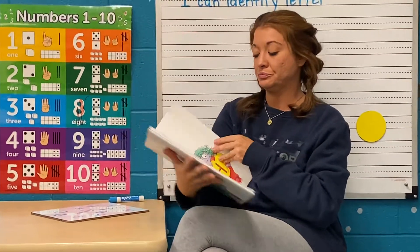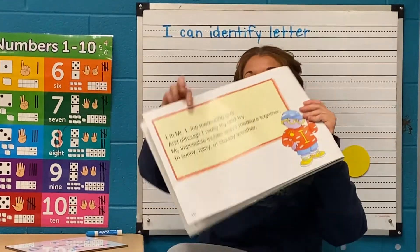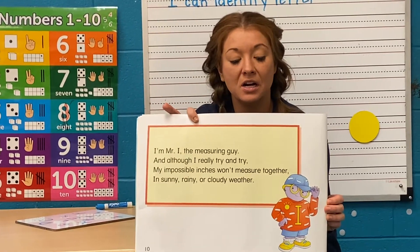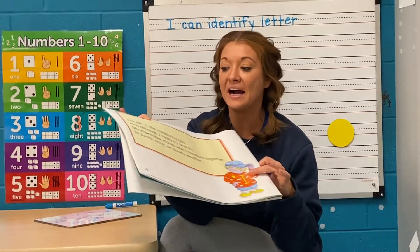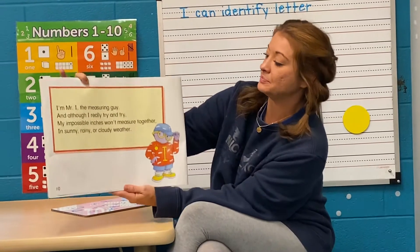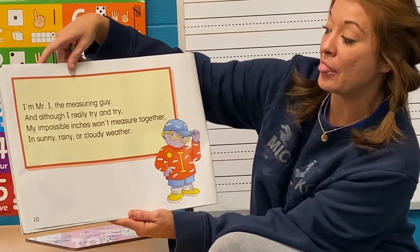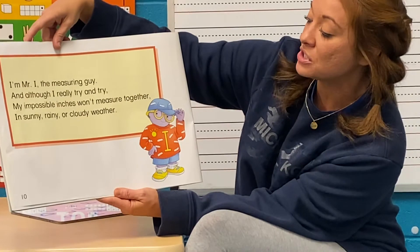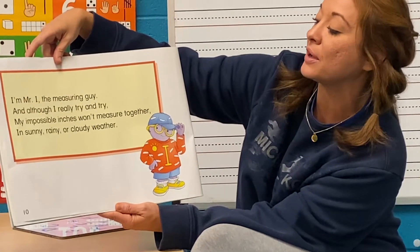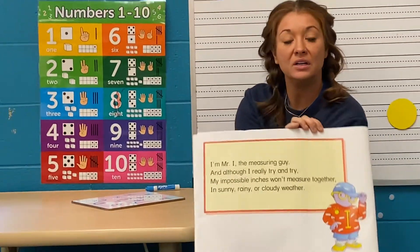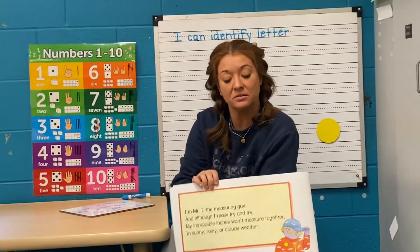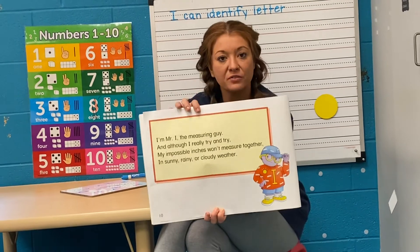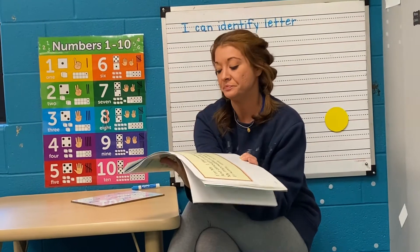Now do we remember this guy? What letter is on his sweatshirt? That's right, that is the letter I, because that's Mr. I! 'I'm Mr. I, the measuring guy, and although I really try and try, my impossible inches won't measure together in sunny, rainy, or cloudy weather.' So 'inch' is like a measurement on a ruler — look, it's got little rulers on there because he measures inches. That's an I word!